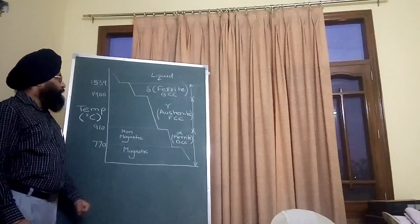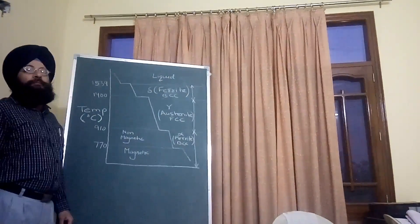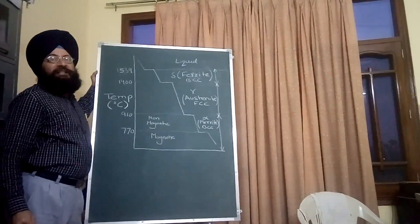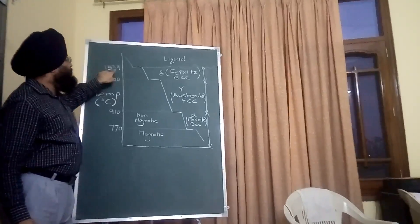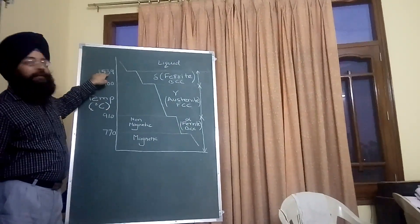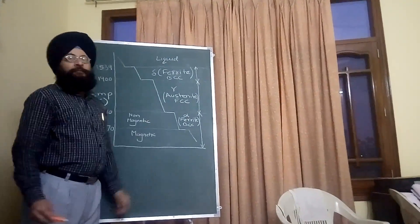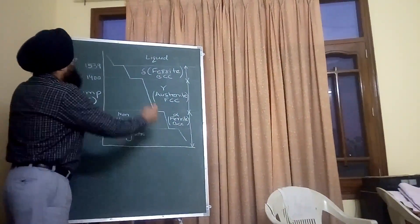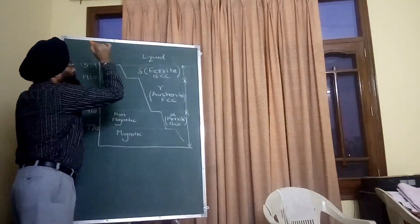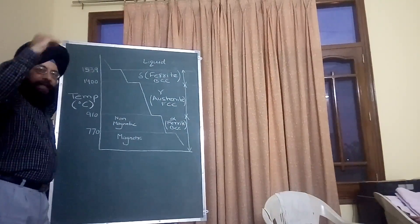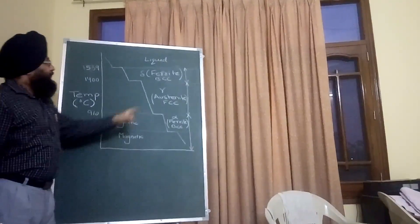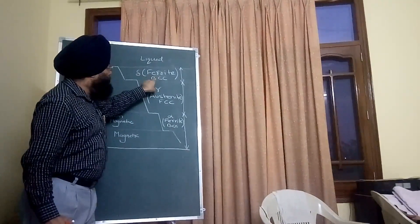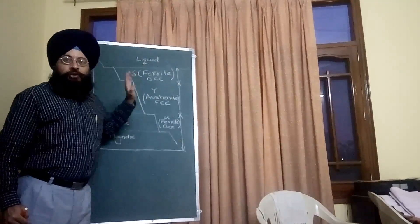Pure iron has a melting temperature of 1539 degrees centigrade. Above this temperature, iron exists in liquid form. Once you cool the temperature of iron below 1539 degrees centigrade, the solidified iron has a body-centered cubic structure.